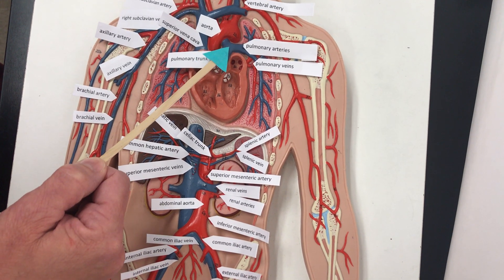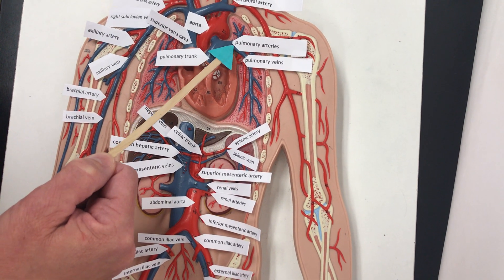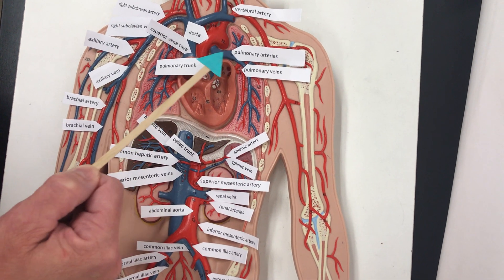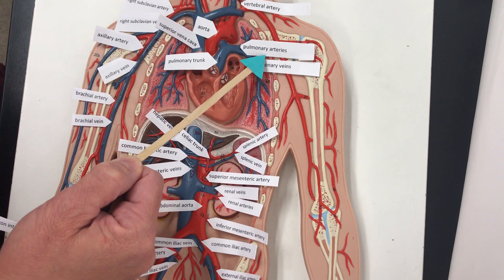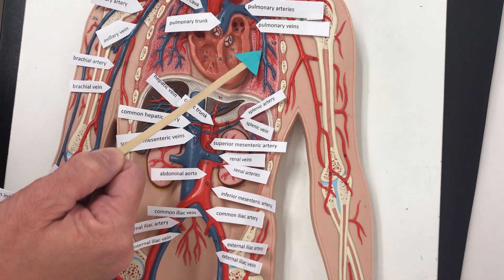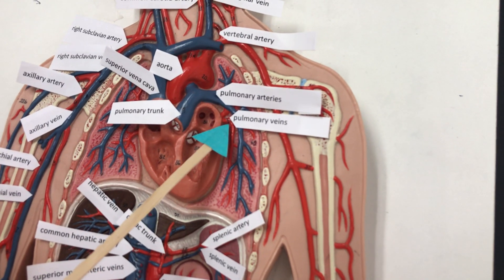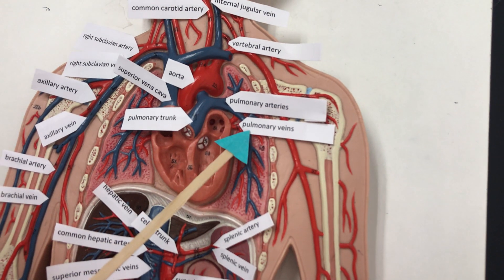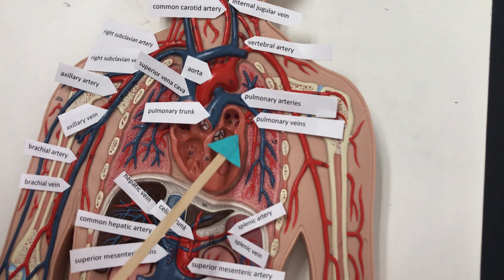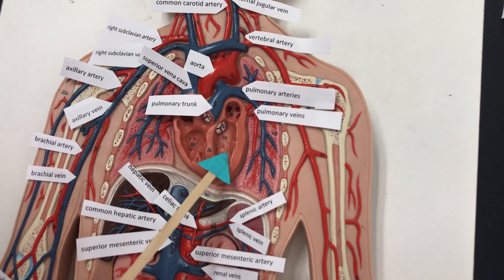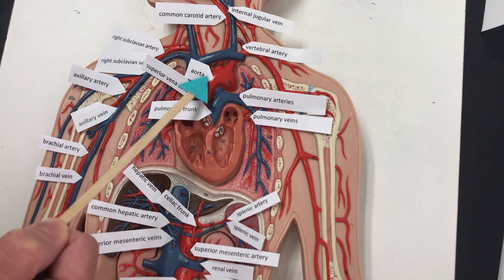The pulmonary trunk carries deoxygenated blood and branches into pulmonary arteries going to the left and right sides. Blood goes to the lungs, does gas exchange, and becomes oxygenated. It comes back to the heart through the pulmonary veins — pulmonary means lungs, and veins means it's coming back to the heart. Then as it goes through the left side of the heart, it's pumped out through the aorta, which carries oxygenated blood.